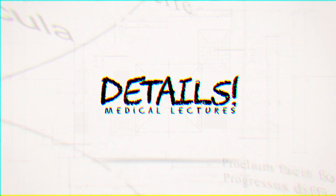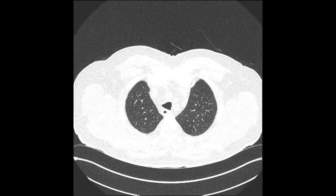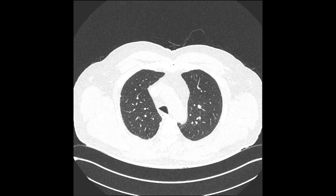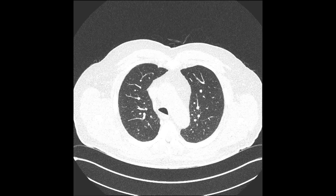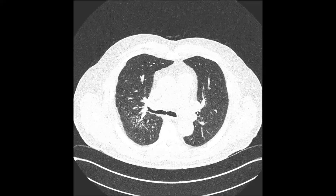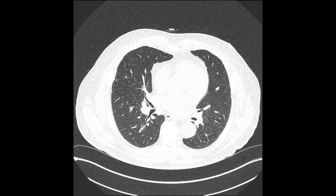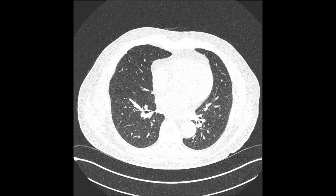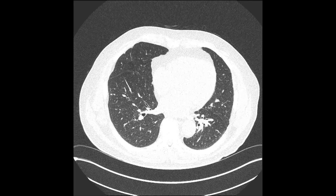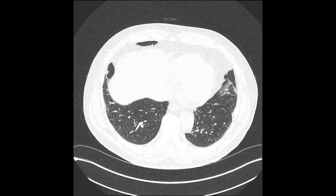This is a CT scan of a patient with stage 2 sarcoidosis, meaning the sarcoid is present in the parenchymal tissue with lymphadenopathy. Stage 1, on the other hand, is just the lymph nodes enlarged. Stage 3 is the lung parenchyma infiltration by itself.